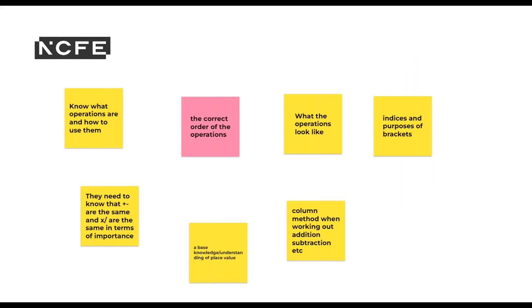And from the Jamboard we got know what operations are and how to use them, to know what the correct order of the operations is, what the operations look like, they need to understand indices and the purposes of brackets, they need to know that plus and minus are the same and times and divide are the same in terms of importance, they need a base knowledge or understanding of place value and it would be useful if they also understand column method when working out addition, subtraction etc.